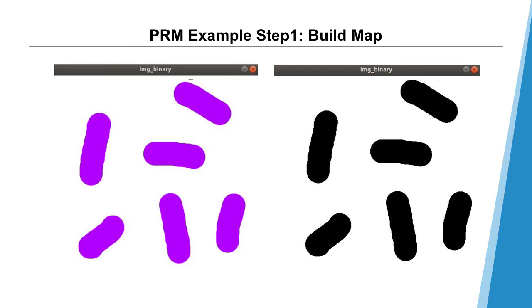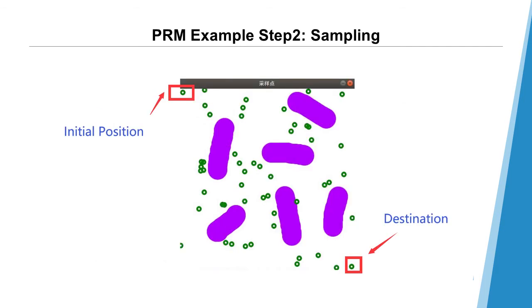Then we convert this image to a binary image for collision detection convenience. And the second step is sampling. We randomly sample a specific number of collision-free points, maybe 50 or 100, checking if all these points don't collide with obstacles. If some do, then discard those colliding points. In this image, the point on the top left corner is the initial position, and the point on the right bottom corner is the destination.